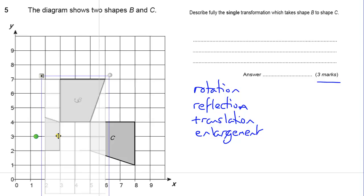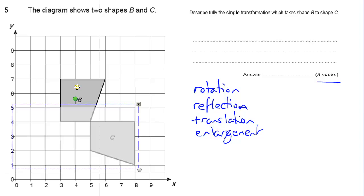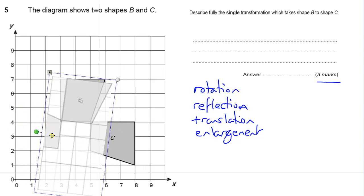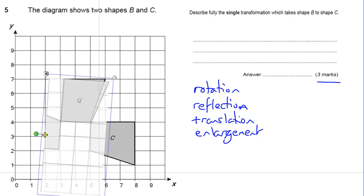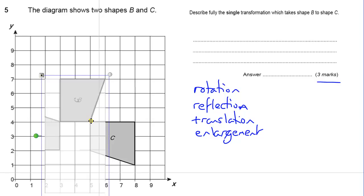If you trace that and then spin it around, you can see if it matches shape C. Now to figure out where it's going to do that, when you trace one shape, you can put your pen on a point. Put a pen on a point and then spin the piece of paper around, see if it matches.